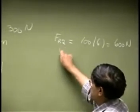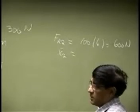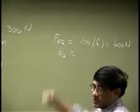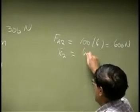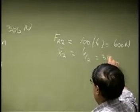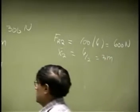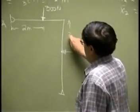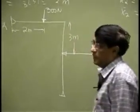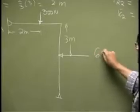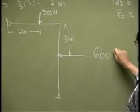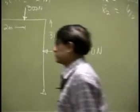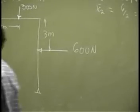Its location is X2 bar. It is a 6 meter length, so it will be half of that, or 3 meters. You have another force at a distance of 3 meters with a magnitude of 600 Newtons.